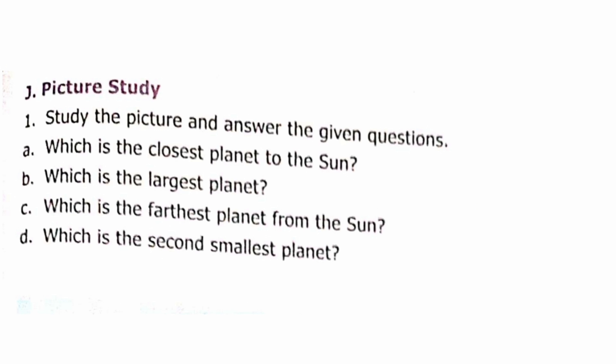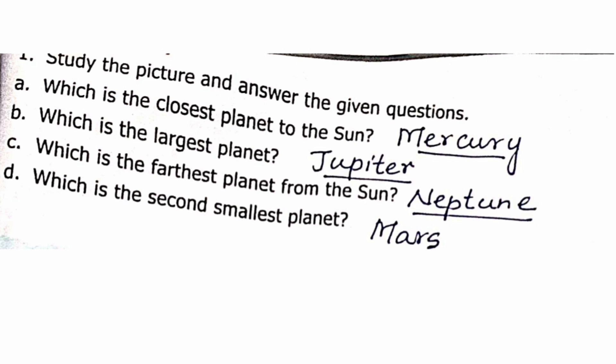Picture Study, Part 1. Which is the closest planet to the Sun? Mercury (M-E-R-C-U-R-Y). Which is the largest planet? Jupiter (J-U-P-I-T-E-R). Which is the farthest planet from the Sun? Neptune (N-E-P-T-U-N-E). Which is the second smallest planet? Mars (M-A-R-S).